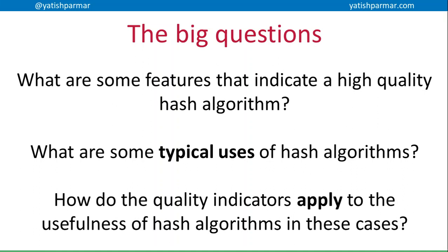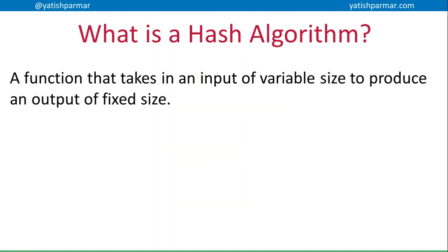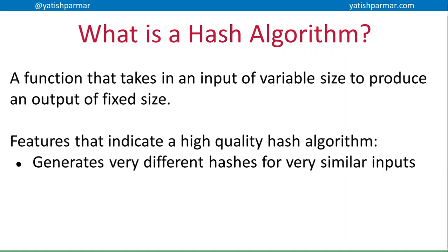There are no fancy animations or anything — this one's going to bang through the content ASAP. So a hash algorithm is a function that's going to take in an input of variable size. We're going to feed in binary strings of varying size, but the hash that is generated is always going to be of the same size. A quality hash algorithm generates very, very different hashes for very similar inputs.